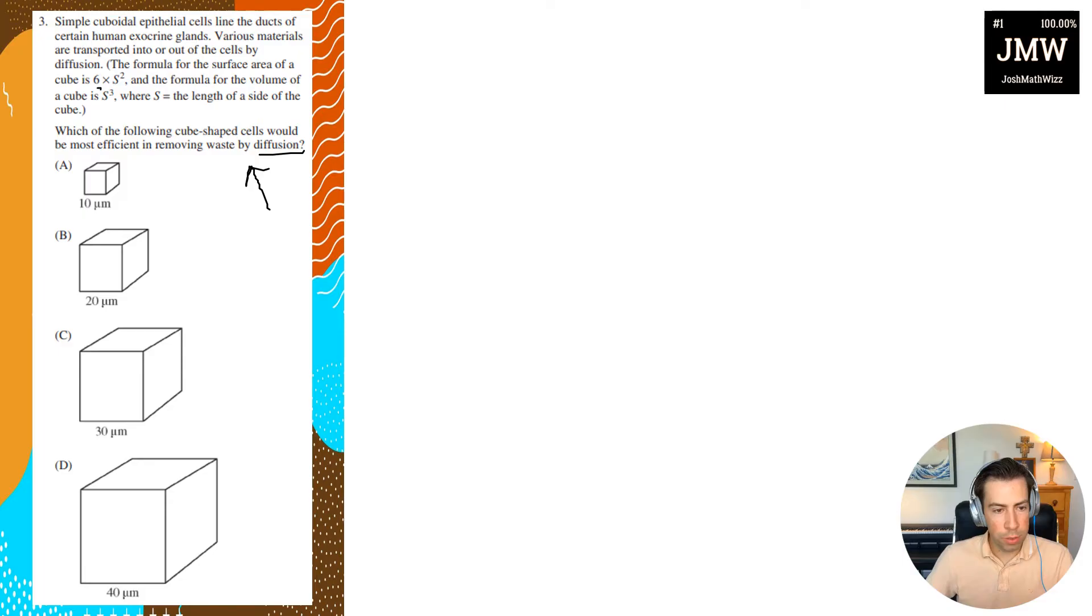Of course they give us the formula for surface area of a cube, which is 6 times s squared, where s is the length of the side of the cube. Remember, any time that we want max diffusion, we want a large surface area.